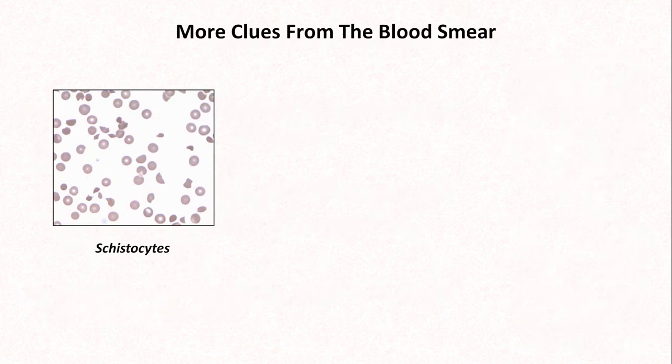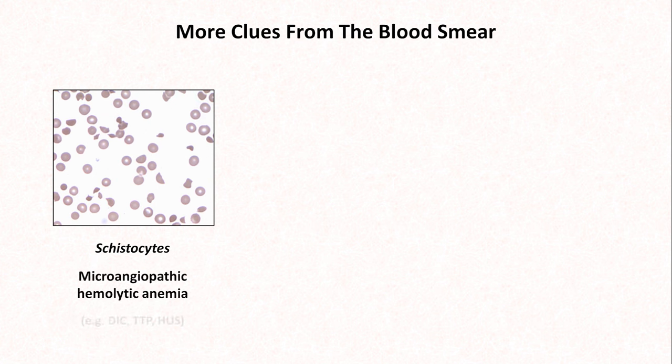Megaloblastic anemia is most commonly caused by vitamin B12 and folate deficiencies. Here we see many examples of schistocytes, which are the fragments of RBCs seen in microangiopathic hemolytic anemia.